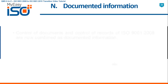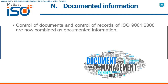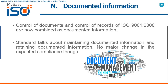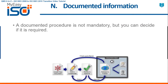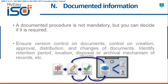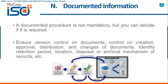N — Documented Information. Control of documents and control of records from ISO 9001 2008 are now combined as documented information. The standard talks about maintaining documented information and retaining documented information — no major change in the expected compliance though. A documented procedure is not mandatory, but you can decide if it is required. Ensure version control on documents, control on creation, approval, distribution and changes of documents. Identify retention period, location, and disposal or archival mechanism of records.